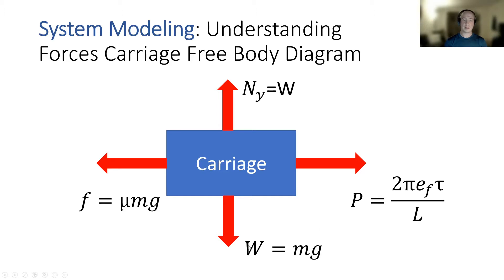In the vertical direction, you have the weight pressing down from the carriage and print head. And then opposing that, we have an equal but opposite force as the vertical normal force Ny = W.